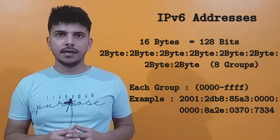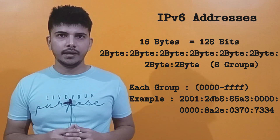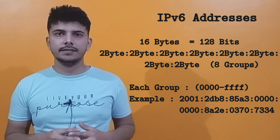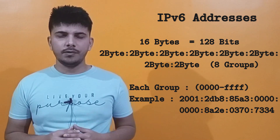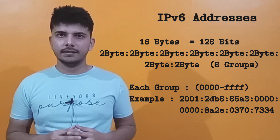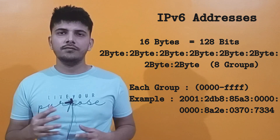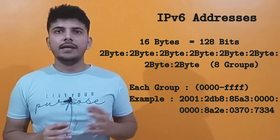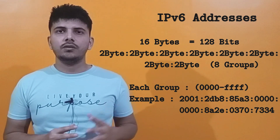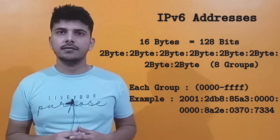Let's first discuss about IPv6 addresses. These addresses are 128 bits long, or 16 bytes long, where each 2 bytes are separated by a colon and written in hexadecimal format. Since IPv6 addresses are 128 bits long, the total number of IPv6 addresses possible are 2 to the power 128, which is over 340 trillion trillion trillion — a number that will never exhaust. So instead of IPv4, we can use IPv6 to uniquely identify each device on the internet.